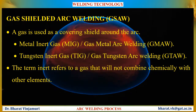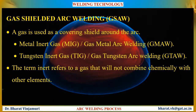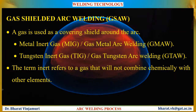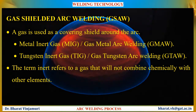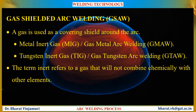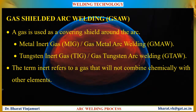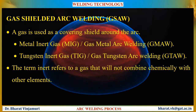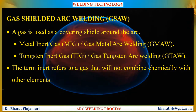In case of submerged arc welding process, the weld zone is protected by a flux. In case of shielded metal arc welding process, the weld zone is protected by gas which is formed due to burnout of flux coating on the electrodes. In this process, that is gas shielded arc welding process, a gas is exclusively used for protecting the weld zone from the atmosphere.